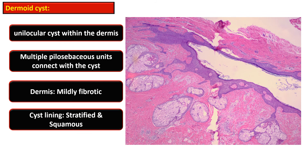On histology, the dermoid cyst shows a well-defined wall that is lined by a stratified squamous epithelium, and the lumen may be filled with mature adnexal structures of mesodermal origin such as hair follicles, shafts, sebaceous and eccrine glands. This picture shows a dermoid cyst — a unilocular cyst within the dermis with multiple pilosebaceous units connected to the cyst. The dermis is mildly fibrotic and the lining of the cyst is stratified squamous epithelium.